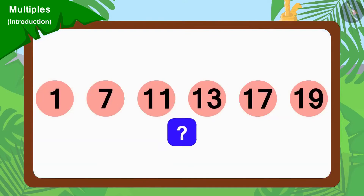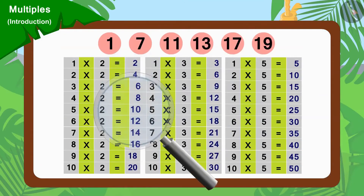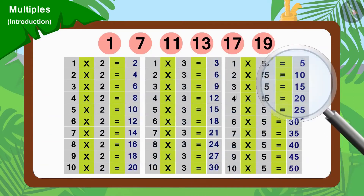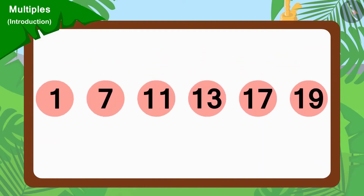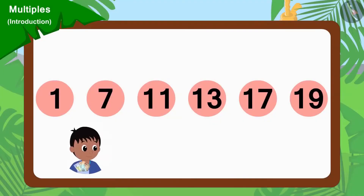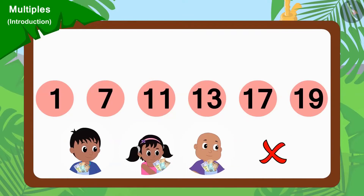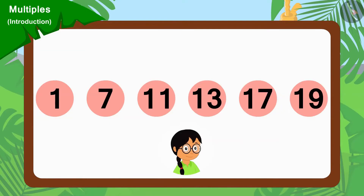But why did it happen? This is because these numbers cannot be divided by any of the numbers 2, 3 or 5. Therefore, we can say that these numbers are not multiples of 2, 3 or 5. As none of Raju, Pinky and Bablu were able to go to these houses, they took Meenu's help and asked her to collect donations from those houses.